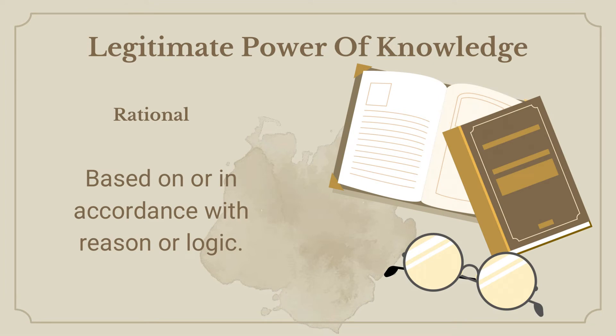Rational: Knowledge is rational if it is based on correct premise. That is, if we have a correct premise, then it is logical.